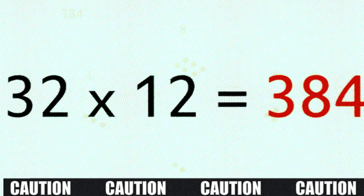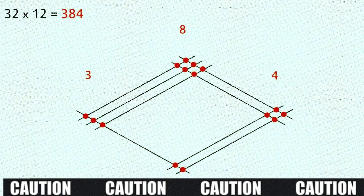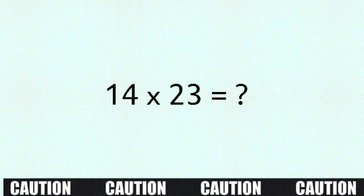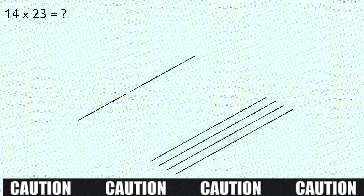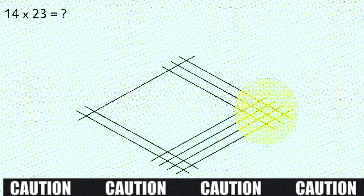But it does get a little more complicated if we add more lines. I'll show you. Let's multiply 14 by 23. So draw out the pattern. 1, 1, 2, 3, 4. 2, and 1, 2, 3. Mark out our zones.